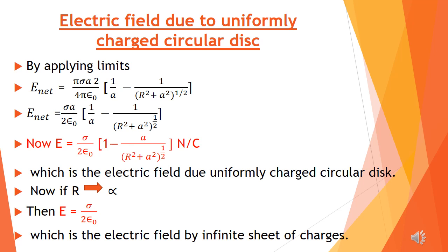So the net electric field becomes: E = (πσa / 4πε₀) · [-2/t^(1/2)] from a² to R²+a². Applying the limits: E = (2πσa / 4πε₀) · (1/a − 1/√(a²+R²)). Cancelling π with π and 2 with 4: E = (σa / 2ε₀) · (1/a − 1/√(a²+R²)) = σ/(2ε₀) · [1 − a/√(a²+R²)] Newton per Coulomb. This is the net electric field due to a disk of charges.